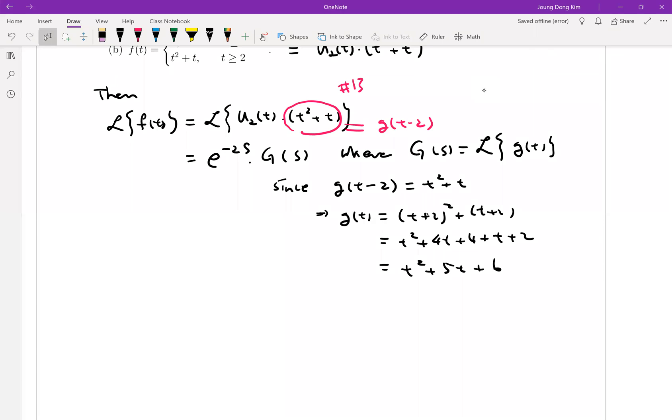Then, since we found g of t, we can find Laplace transform of g of t. Laplace transform of g of t is equal to Laplace transform of t squared plus 5t plus 6. Since it's linear, that's the Laplace transform of t squared, plus 5t, plus 6 times Laplace transform of 1.